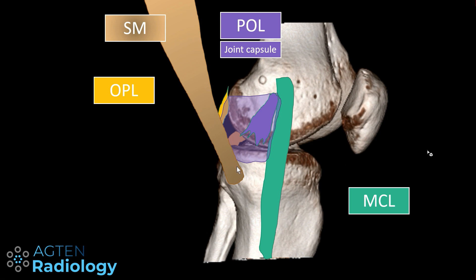This is the semimembranosus muscle, which is part of the posterior medial corner and a very important dynamic stabilizer. Then here, only partially seen, is the oblique popliteal ligament, which I will show you in a minute.